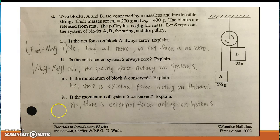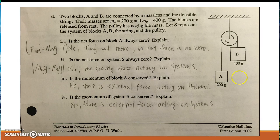Part D, question 1: the net force on the block is not zero because the blocks are moving. The net force on system S is not zero because there is a gravity force on the system. The momentum of block A is not conserved because there is an external force acting on it. The momentum of system S is also not conserved because there is an external force acting on system S.